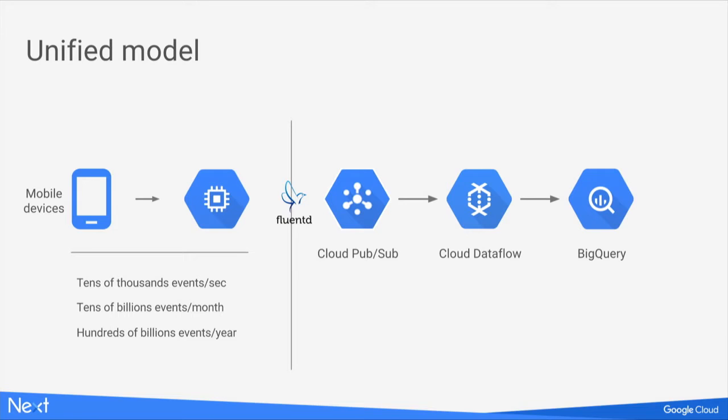Most customers, before they start using Cloud Dataflow, use something called a Lambda architecture — a collection of tools like Hadoop, Spark, and Kafka — which is optimized for specific flows of data, for batch processing and for streaming processing. Once customers switch to Dataflow, they take advantage of a unified model. This is one of the major reasons customers are migrating — it offers a unified way of doing batch and streaming, and you can use it with other GCP products such as PubSub and BigQuery.